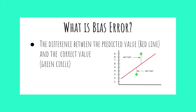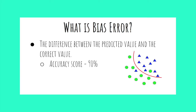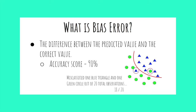Bias is the difference between the predicted value and the actual value. For example, if I predicted a value to be 9 but the actual value was 6, my bias error is 3. In a classification problem where I classified 90% of observations correctly, my bias error is 10%. Bias error is related to the error metric you use, whether it be mean squared error, R squared, accuracy, precision, or recall.